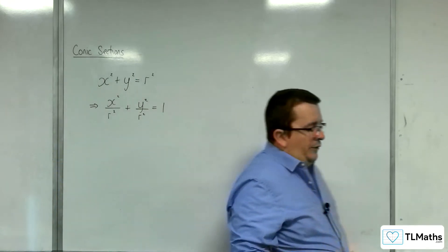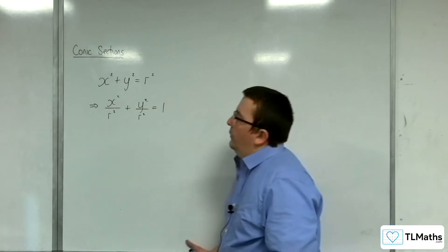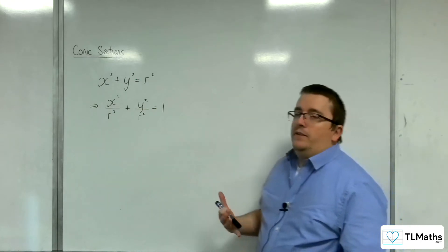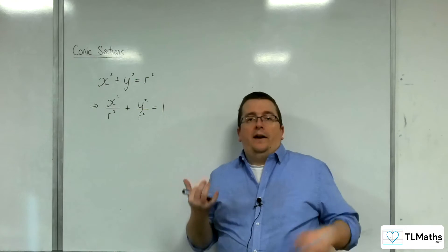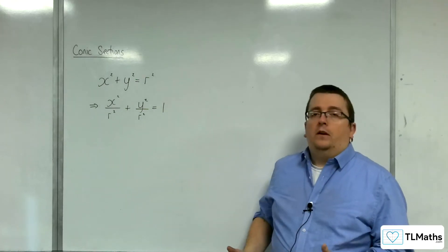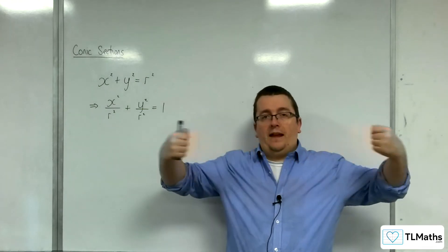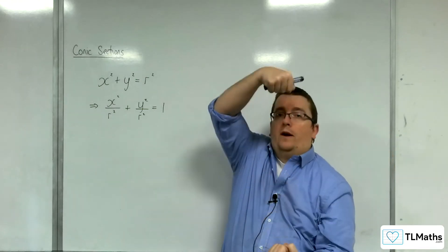Now, the reason I show you it in that form is because if we were then to extend this to an ellipse, an ellipse is just a stretched circle. A circle that has been stretched either parallel to the x-axis or parallel to the y-axis.